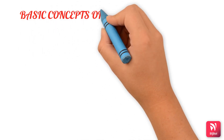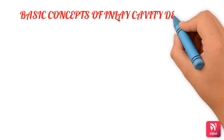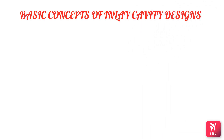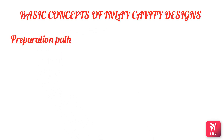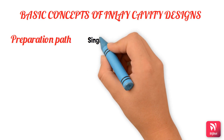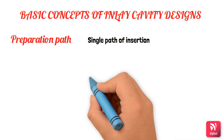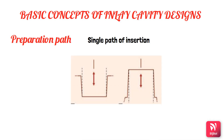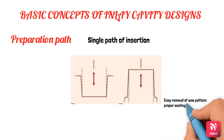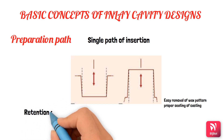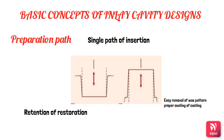In general, the principles of inlay cavity preparations are similar to those of amalgam and other direct materials. However, certain concepts are different for cast gold inlays, and certain design features are specific to these preparations. One of those is the preparation path — there should be a single preparation path opposite to the direction of occlusal loading, usually parallel to the long axis of the tooth. The single path allows easy removal of the wax pattern and proper seating of the casting, increases retention, and minimizes rocking during function.